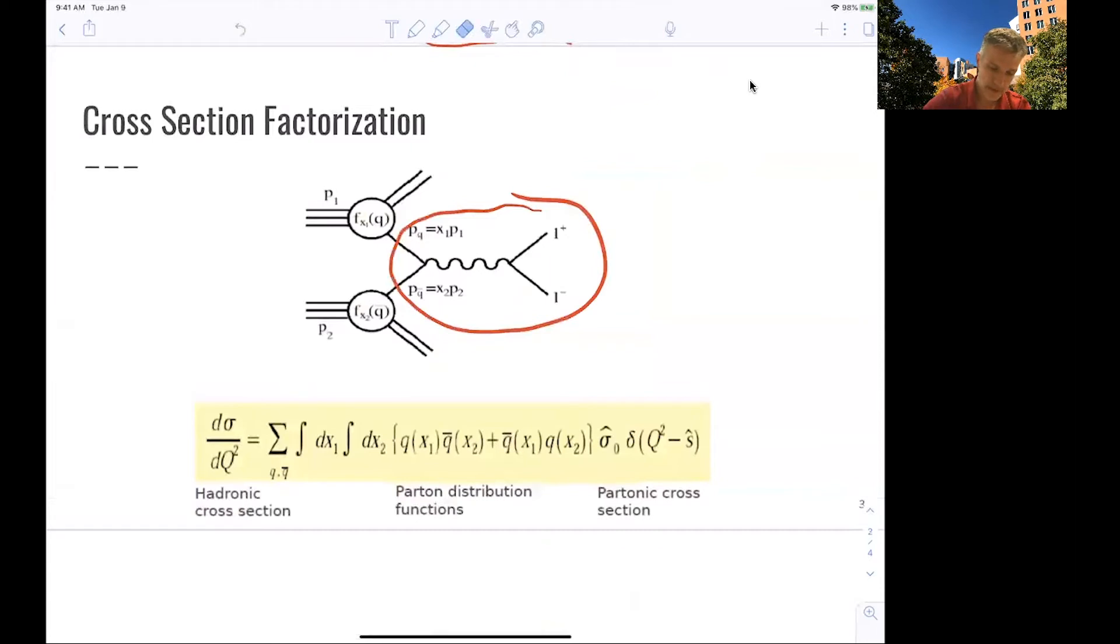let's say, an initial quark and an antiquark colliding with exchange of a photon. We haven't seen how we can do this with a z-boson, but we'll see that next week. This process here is called Drell-Yan production,